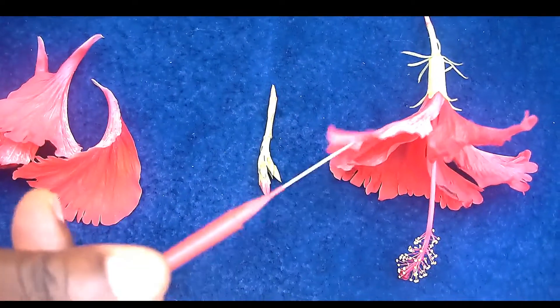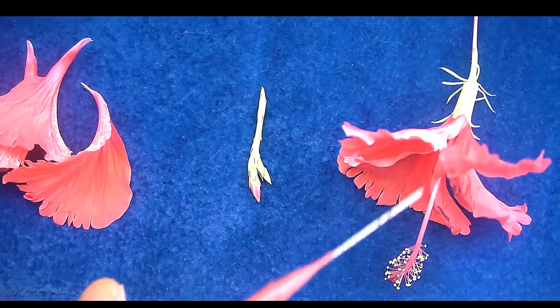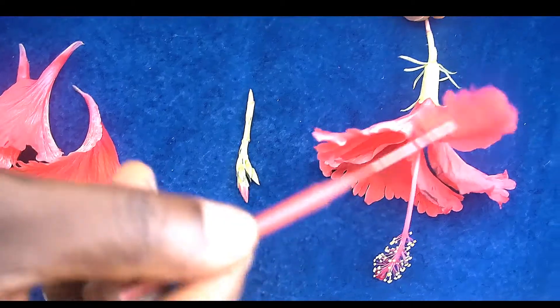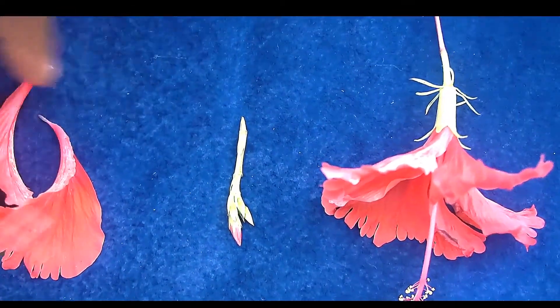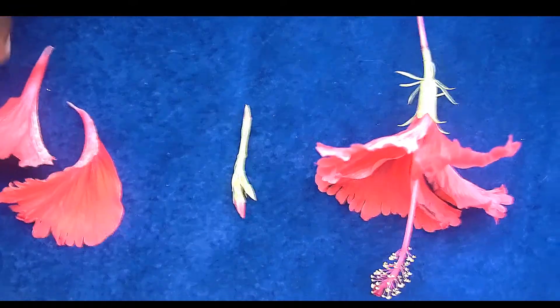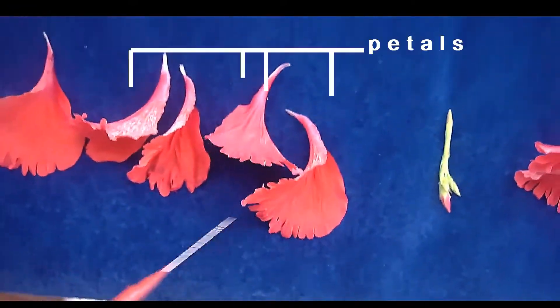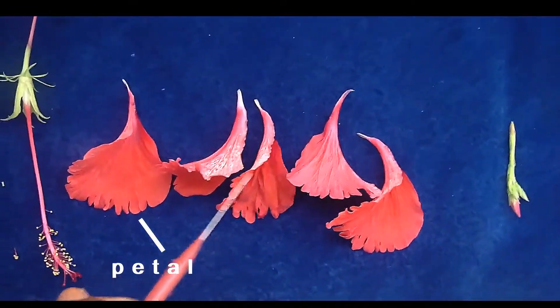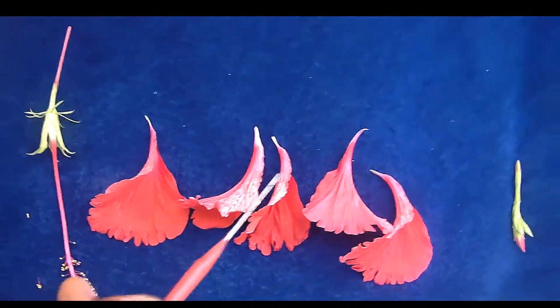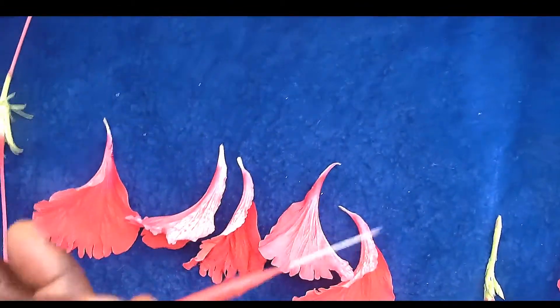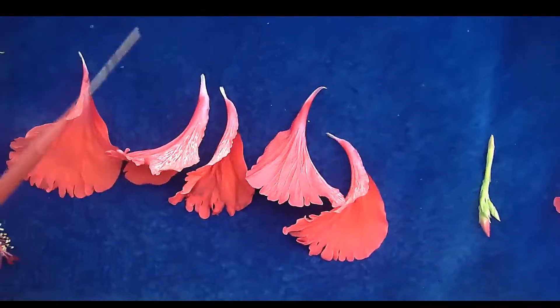Now, each of these, each of these, the corolla, like here, put them here, each of them is called a petal. You see the petal? You see the petal?